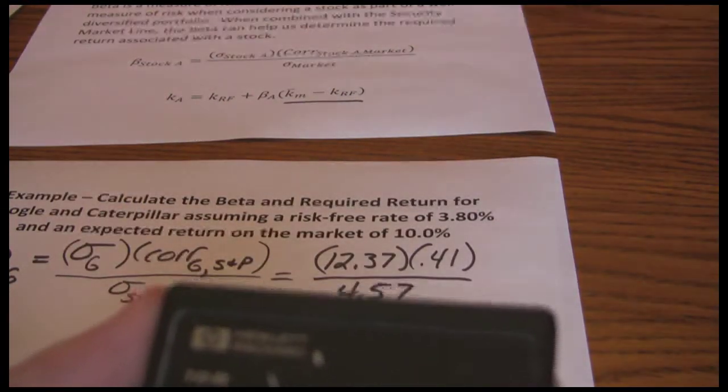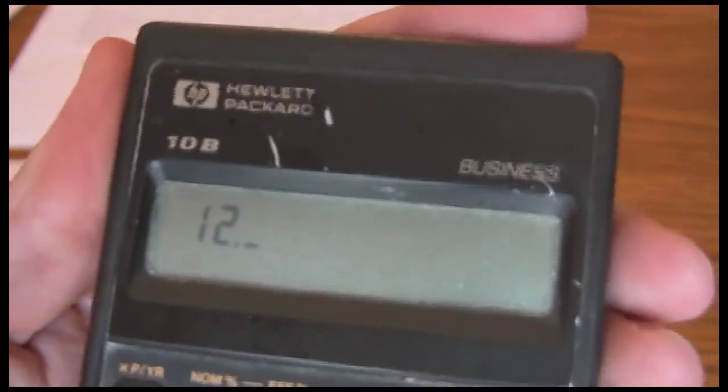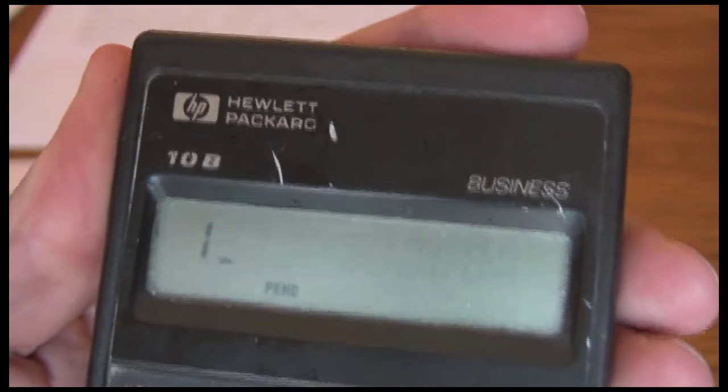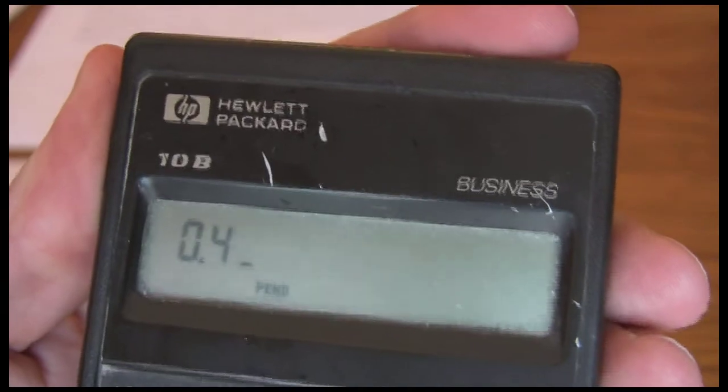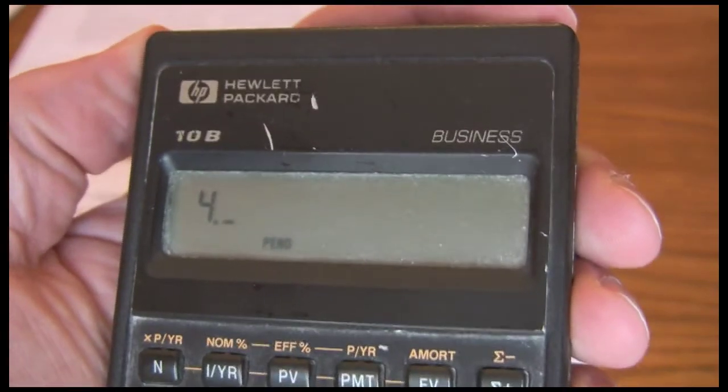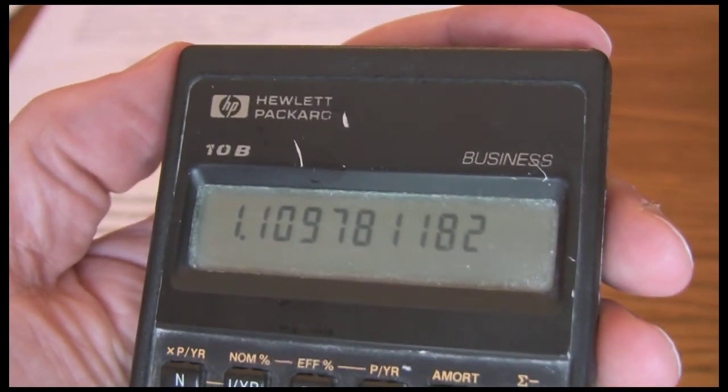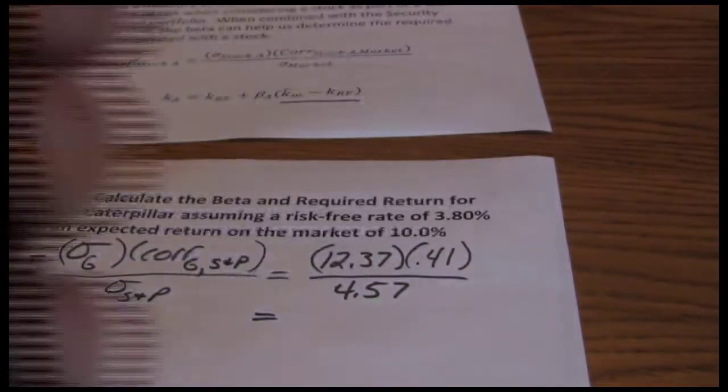Now we just grab our calculator, go through 12.37 times 0.41. And now divide that by the 4.57 standard deviation of the market. That gives us a beta for Google of 1.11. I'm just going to round it to two decimal places. So we see that 1.11 is our beta for Google.